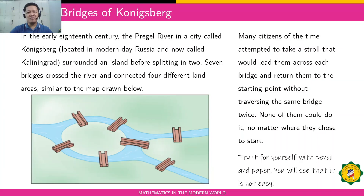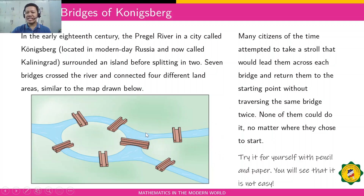This is a famous math problem — the seven bridges of Königsberg. In the early 18th century, the Pregel River in a city called Königsberg, located in modern-day Russia and now called Kaliningrad, surrounded an island before splitting in two. Seven bridges crossed the river and connected four different land areas, similar to the map shown. Many citizens of the time attempted to take a stroll that would lead them across each bridge and return them to the starting point without crossing the same bridge twice.